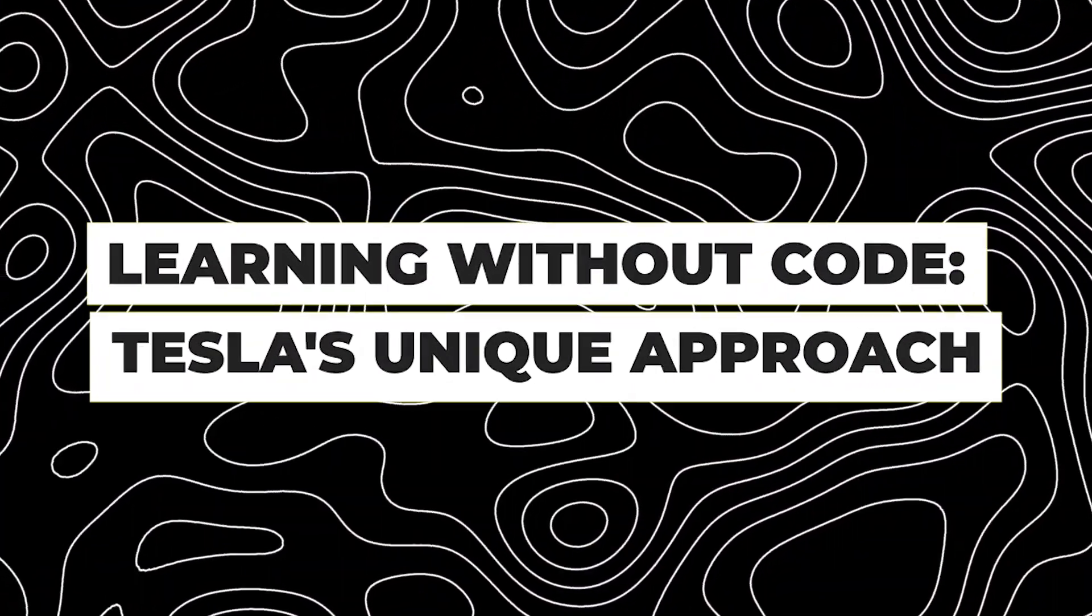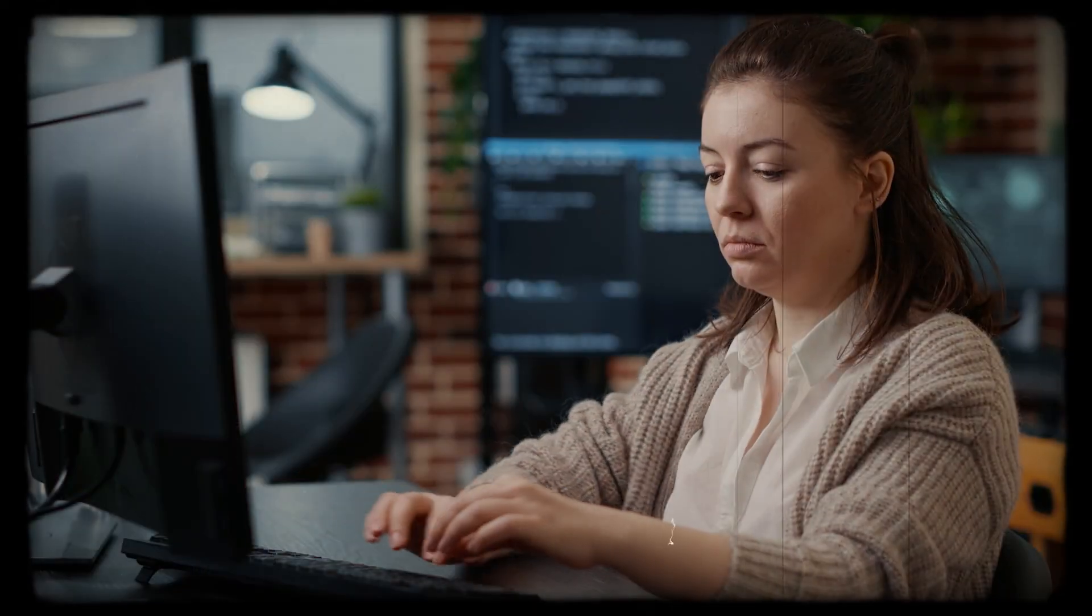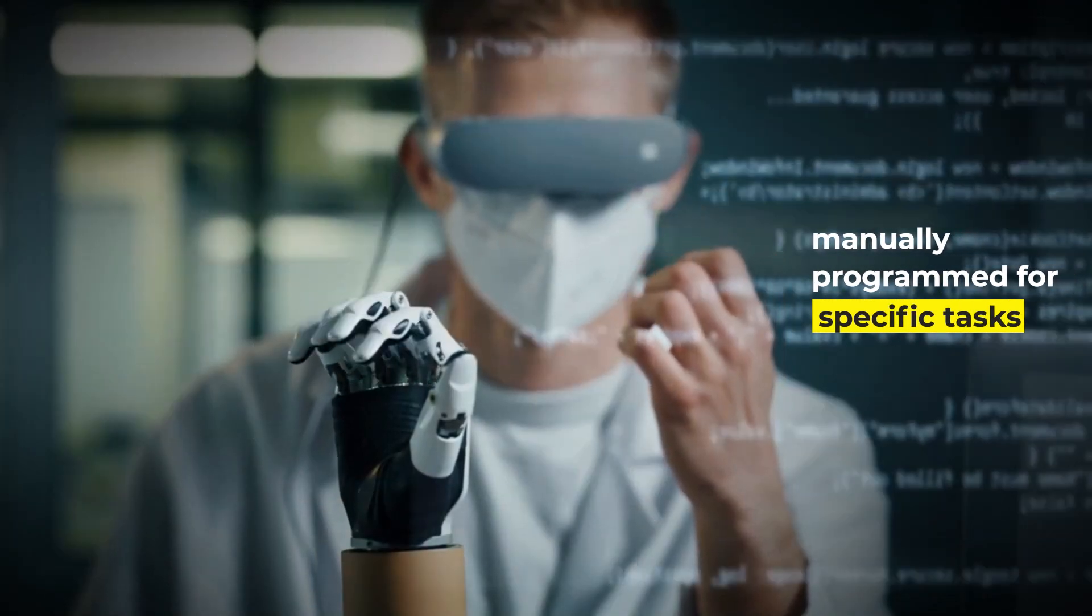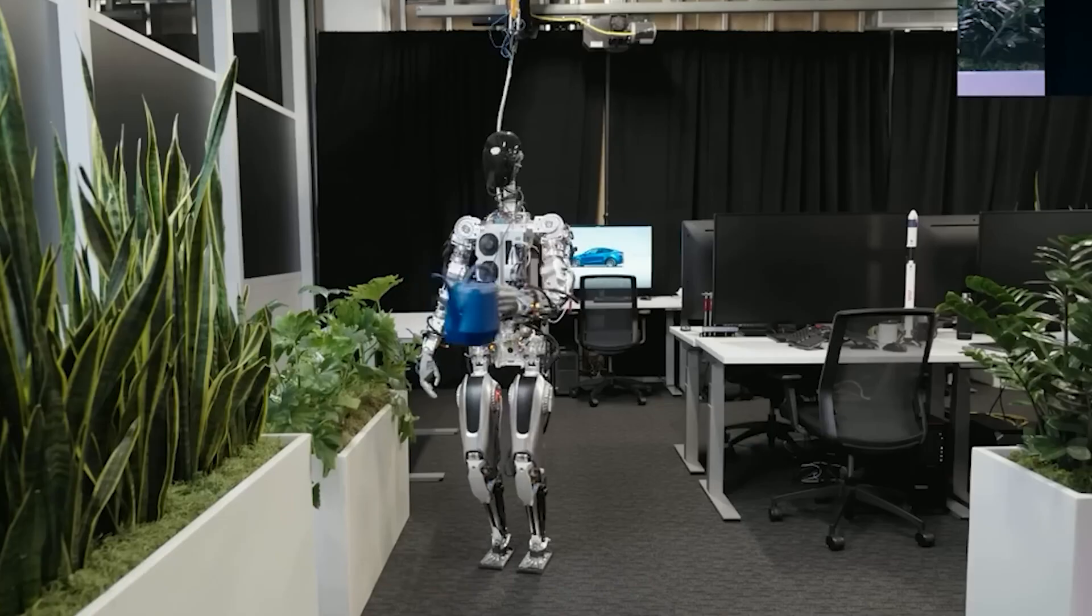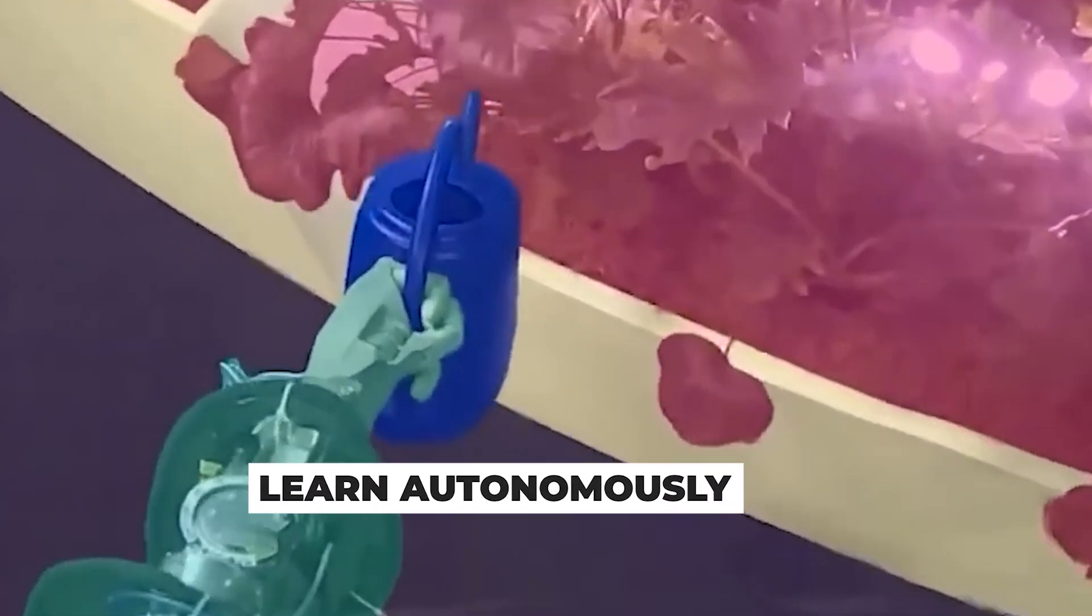A distinguishing characteristic of Optimus Robot is its approach to learning, a departure from traditional robotics programming. Unlike conventional robots that are manually programmed for specific tasks, Optimus is designed to learn autonomously, akin to human learning processes.